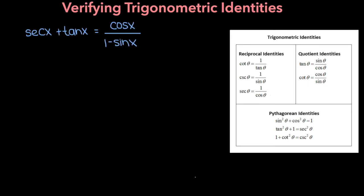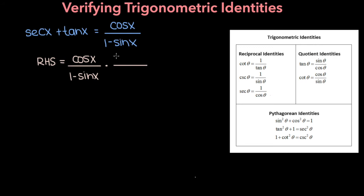Here's the third problem. We need to show that secant x plus tangent x is equal to cosine x over 1 minus sine x. For this problem let's start with the right-hand side. On the right-hand side we have cosine x over 1 minus sine x, and the trick here is going to be to multiply the numerator and denominator of this fraction by the conjugate of the denominator. The denominator is 1 minus sine x, so its conjugate is 1 plus sine x. So we're going to multiply the numerator and denominator by 1 plus sine x.